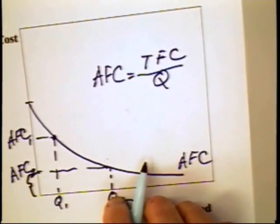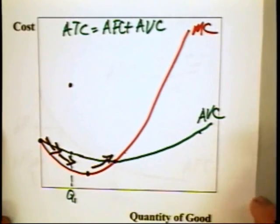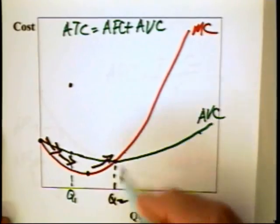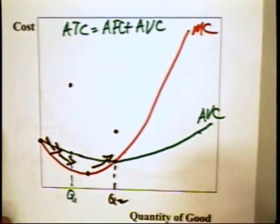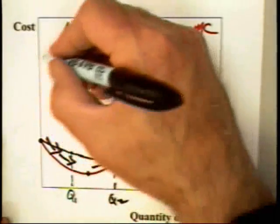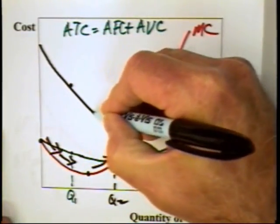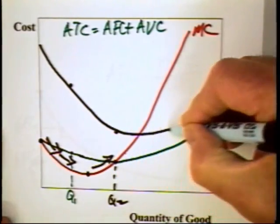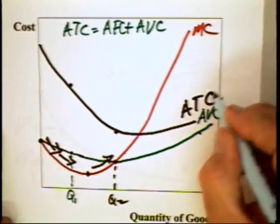We add that to the average variable cost at about, say, here. And we get a point of about right there. Moral of the story is that the average total cost curve has got to look something like this. Average total cost.